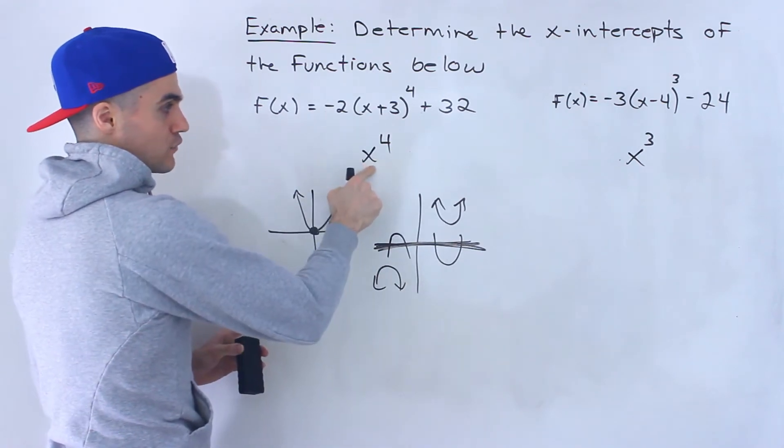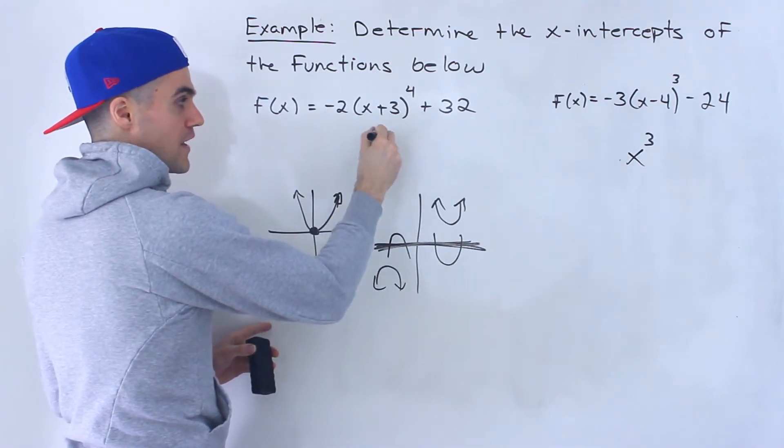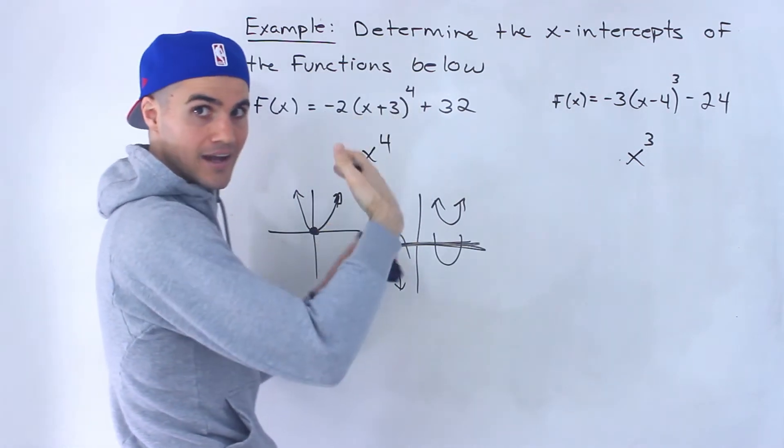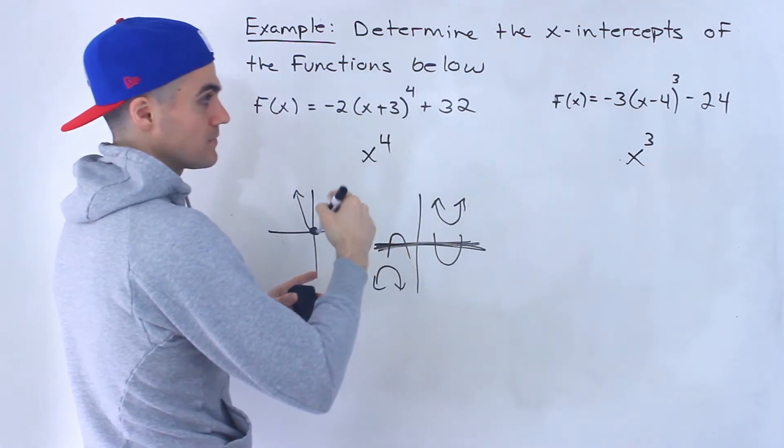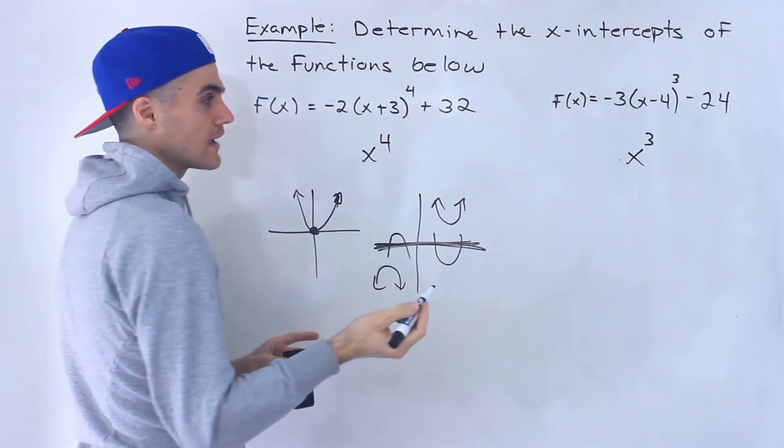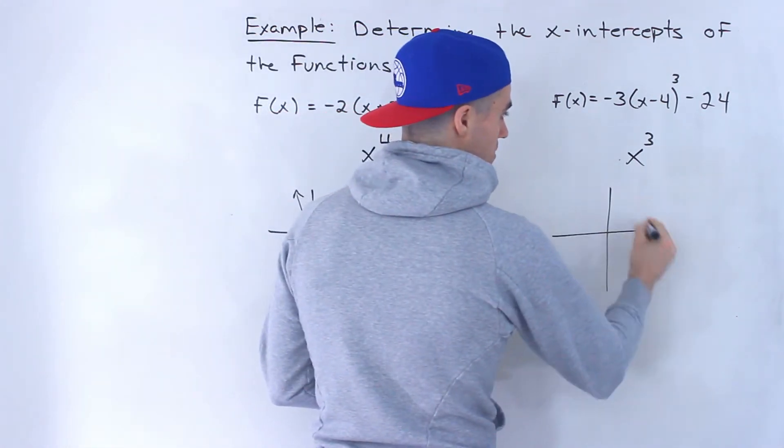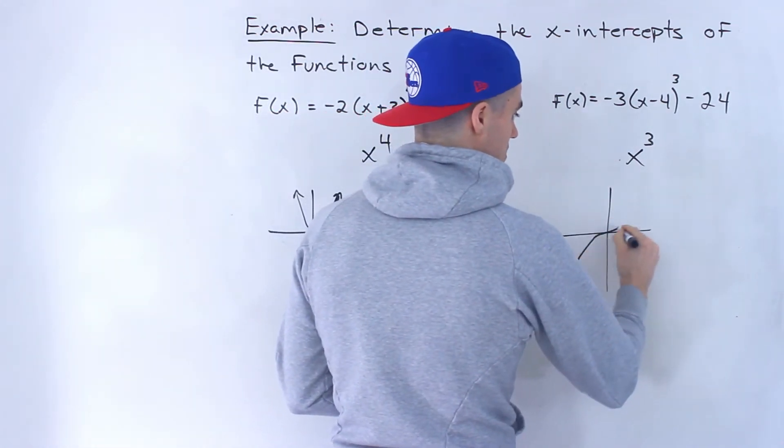So there's three cases for the x-intercepts for this parent function and any transformations for it. Versus x^3, there's always only one case. So it's always the parent function, this function, it looks like this.